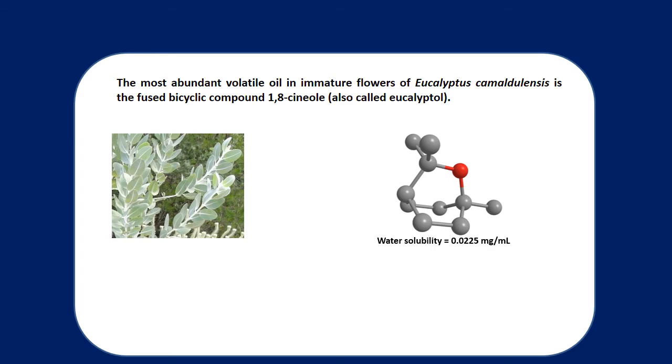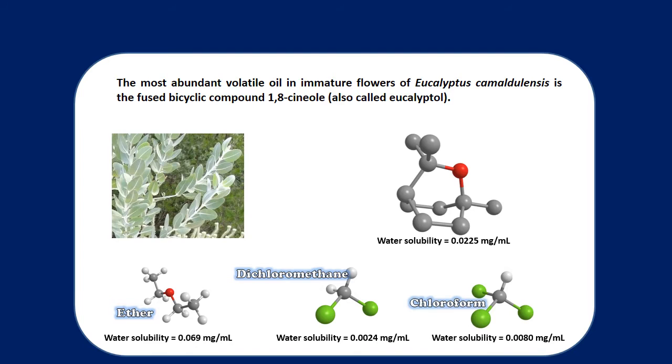In fact, eucalyptol's solubility in water is about 0.0225 milligrams per milliliter. Even this very marginal solubility can generally be neglected, as is evidenced by many of the solvents we use in the organic chemistry lab. We often think of ether, dichloromethane, and chloroform as being completely immiscible with water, when the truth is that they do have a very small solubility. But it's so small that it's essentially negligible, and we're going to treat our eucalyptol in the same way.